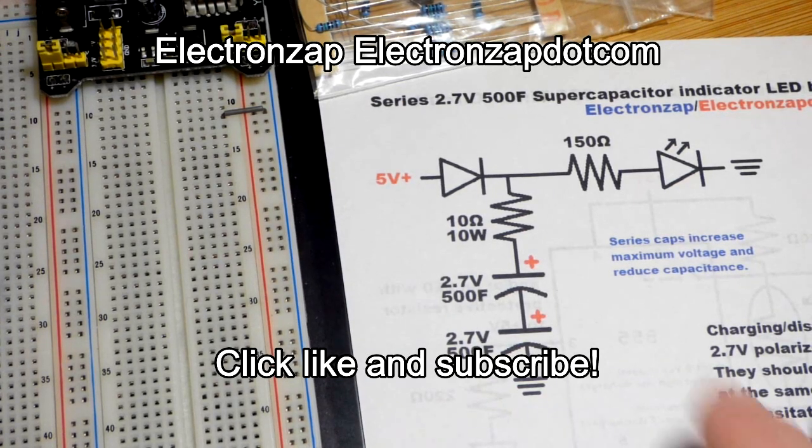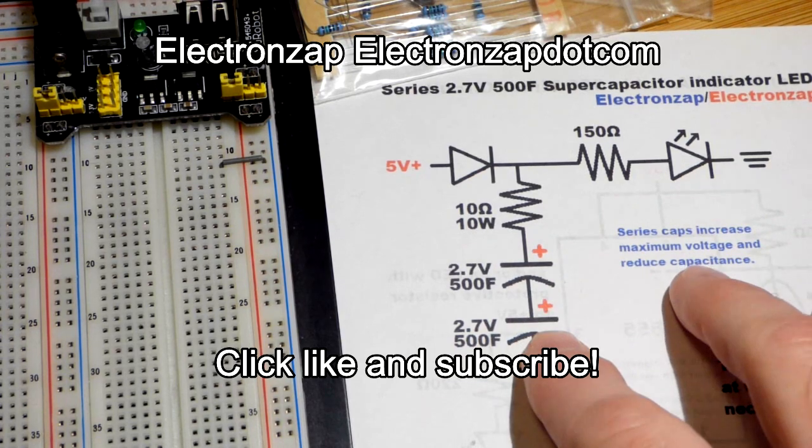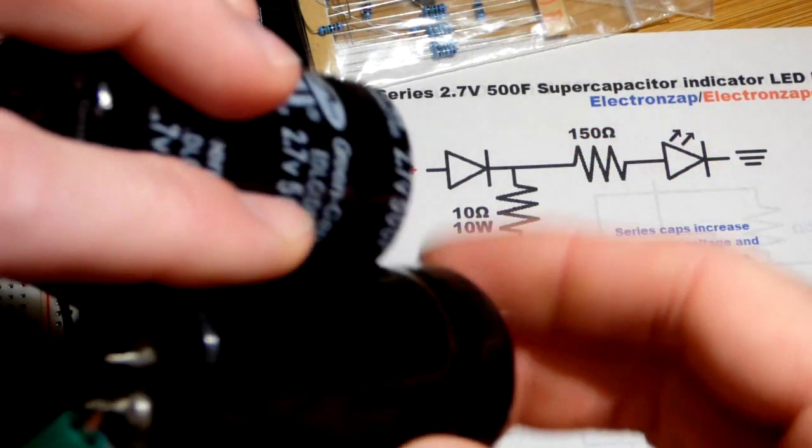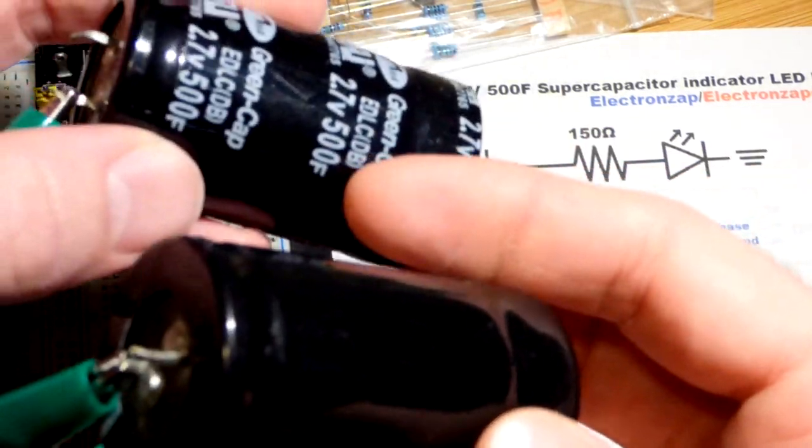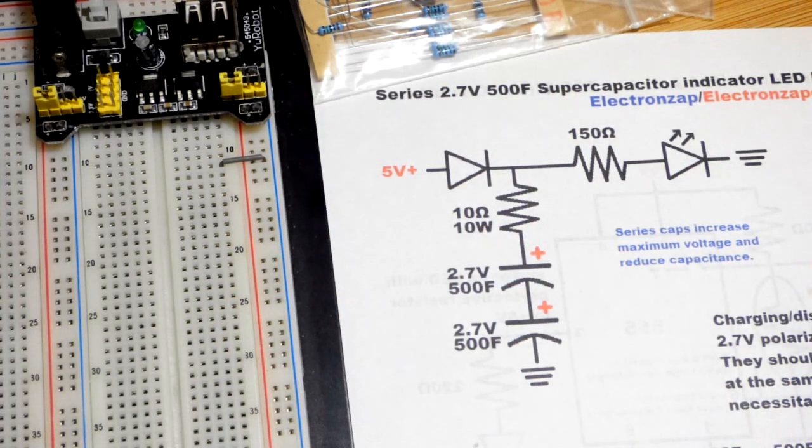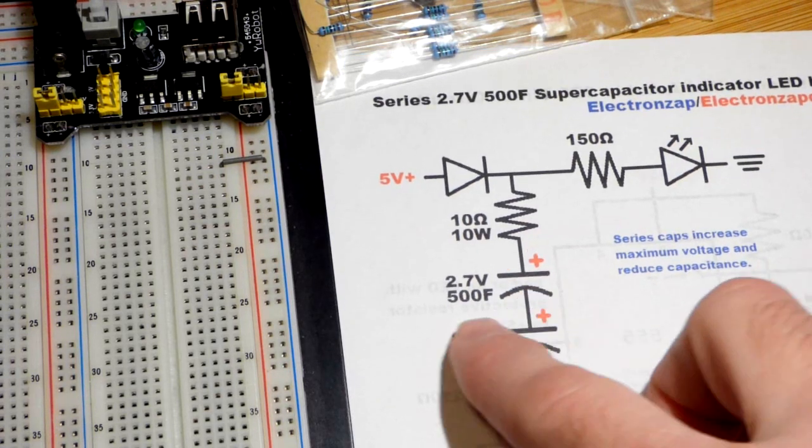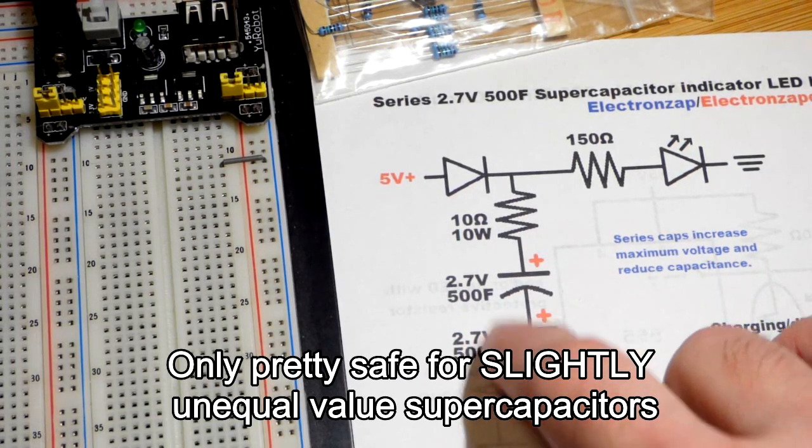So now in this video we're going to build a miniature version of a backup power supply using 500 Farad supercapacitors. That's their rated value, they're probably lower than that and probably unequal, but we're going to make a circuit that's pretty safe even for unequal supercapacitors.